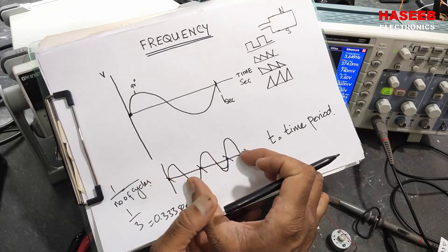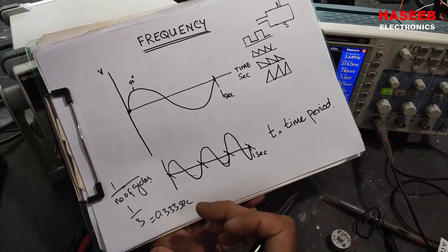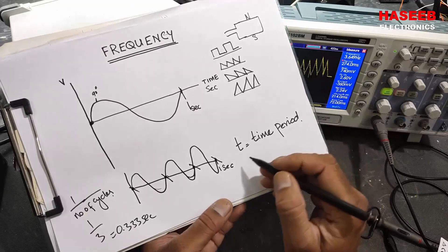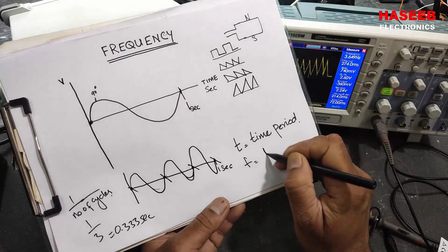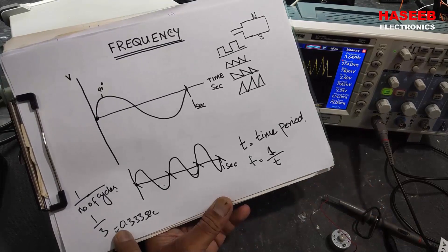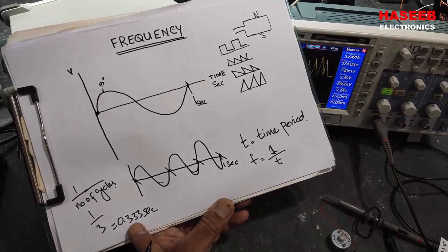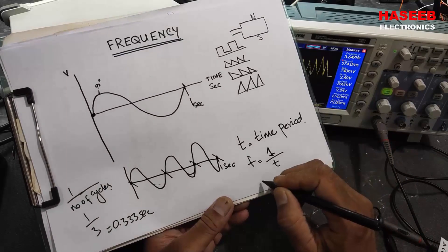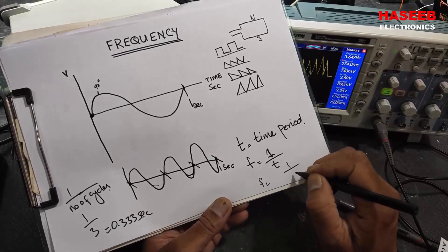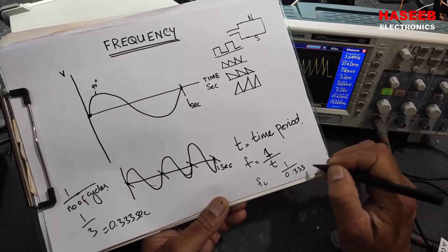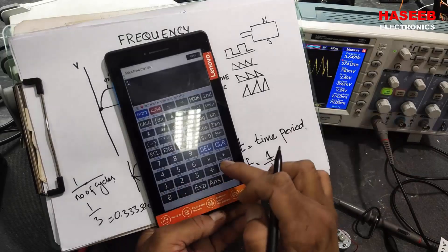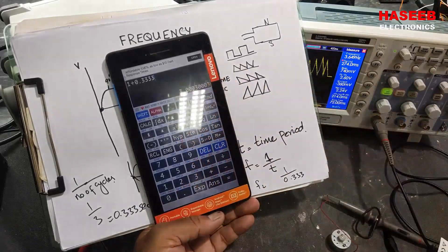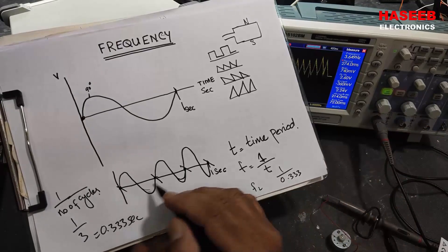If we will increase the frequency, if we will increase the repetition, this time period will decrease automatically because it is inversely proportional. And frequency is equal to one over time period. How much time is allocated for one cycle? Here we allocated 0.33 seconds. So one over 0.3333 seconds - one divided by 0.3333 - so our frequency is 3 hertz. So we are repeating three cycles in one second.